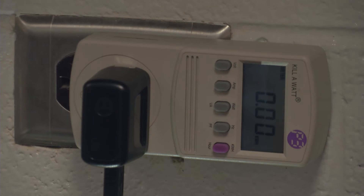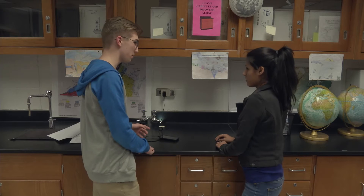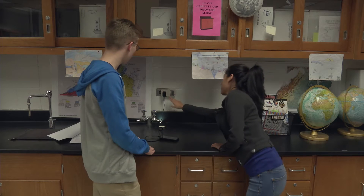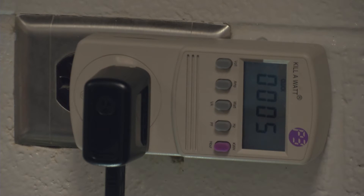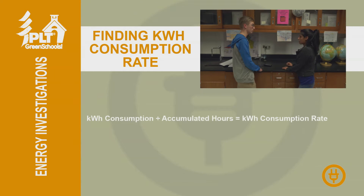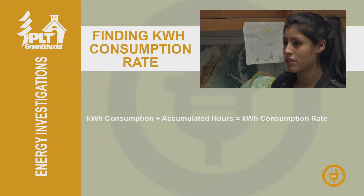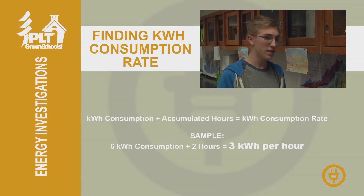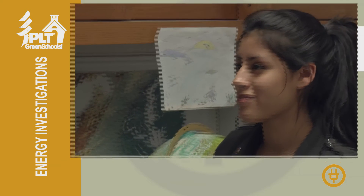So that reading is the kilowatt hour consumption of my phone since you plugged it in. Yep. Now if I push the button again, the meter tells us how many hours have passed since we plugged in your phone. Why would you want to know that? Because if you divide the rate of kWh consumption of a device by the number of hours it's been plugged in, you get the rate of the device's consumption. Makes sense.